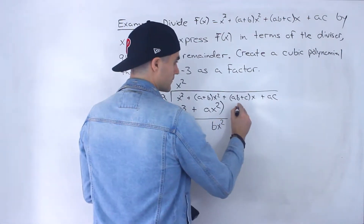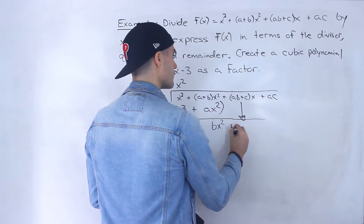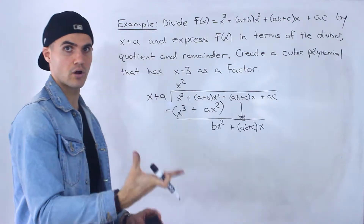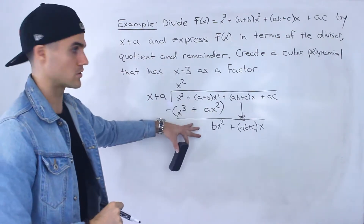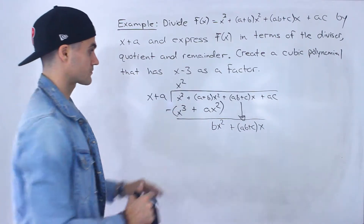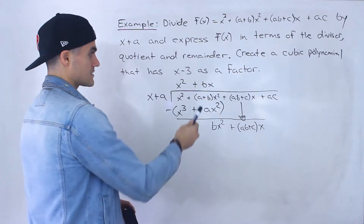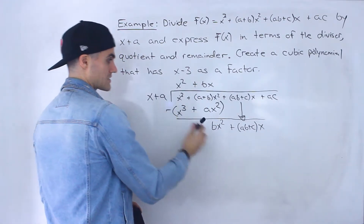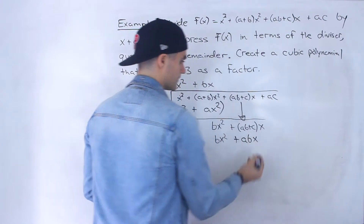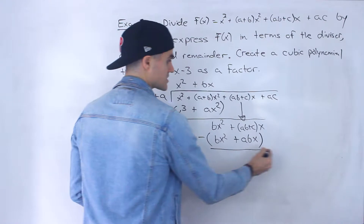Now we bring down the next term, so we end up having (ab plus c)x. How many times does x go into bx squared? bx times. bx times x gives us bx squared, and bx times a gives us abx. So we subtract: bx squared minus bx squared is 0.